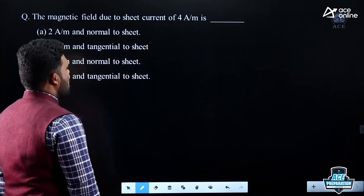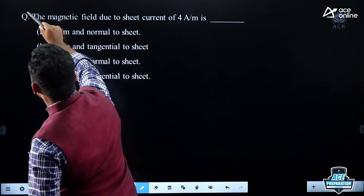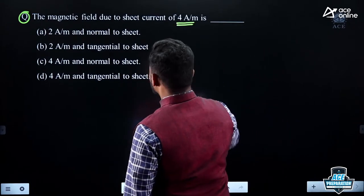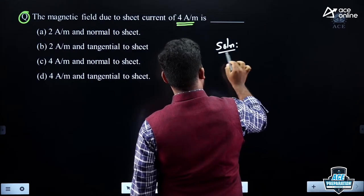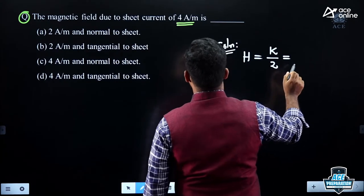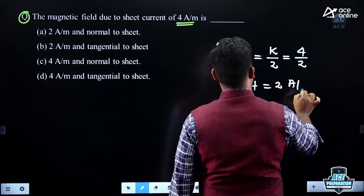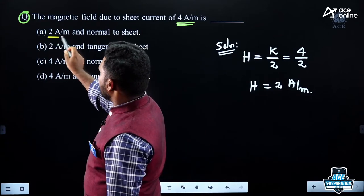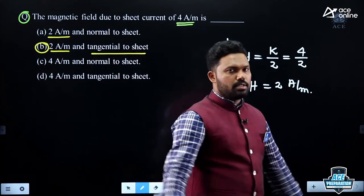Question: what is the magnetic field due to a sheet current of K = 4 ampere per meter? H = K/2 = 4/2 = 2 ampere per meter, and it is tangential to the sheet. Option B is the answer.